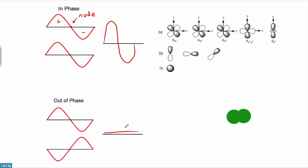It turns out we're looking at the extremes here — anything in between can happen as well, but the extremes are the most useful for the discussion at hand. So when these two s orbitals overlap, the question is: constructive overlap or destructive overlap? It turns out it's a bad question, because it's not really 'or' — it's 'and.'